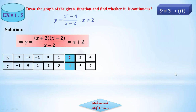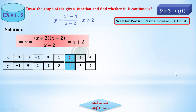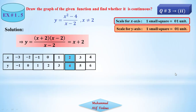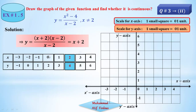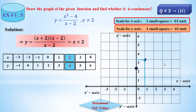Now let's draw this. Scale on x-axis: one small square equals one unit, and on y-axis one small square equals one unit. Let's plot the numbers: x equals 0, y equals 2. Then x equals 1, y equals 3. Place them on the graph.